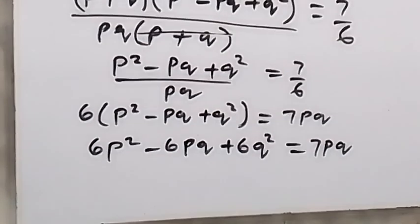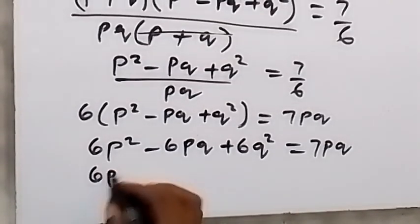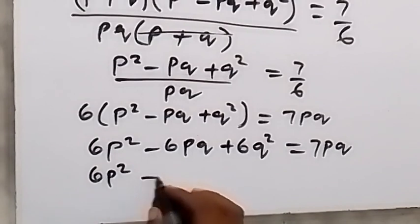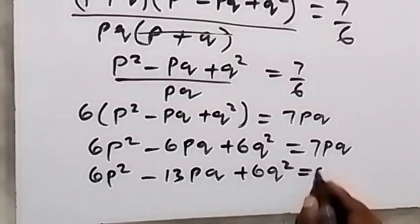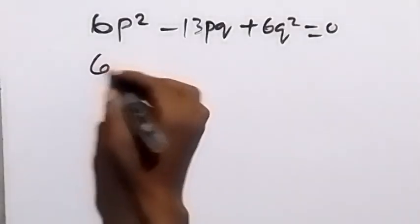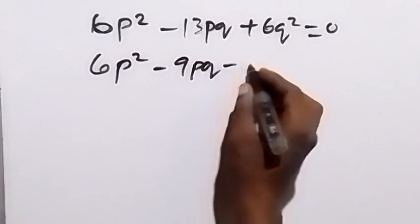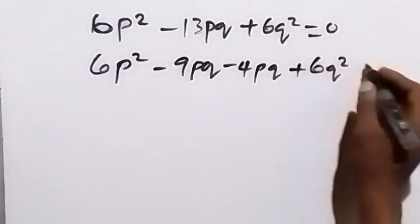Opening the bracket gives us 6t squared minus 6tq plus 6q squared equals 7tq. Bringing 7tq to the left side, we get 6t squared minus 13tq plus 6q squared equals zero. We now solve this as a quadratic equation by factorizing, splitting the middle term as minus 9tq minus 4tq.